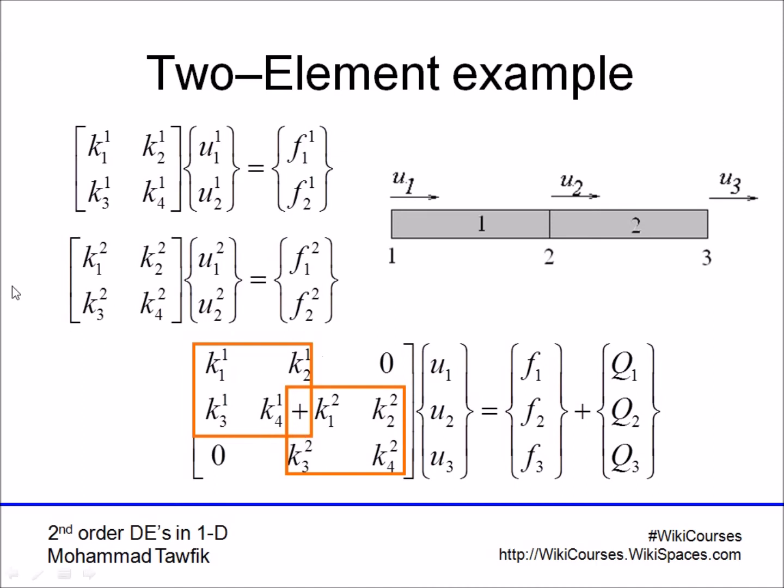The last equation is k₃ times u₁ of the second element, which is u₂, and k₄ multiplied by u₂ of the second element, which is u₃. In the middle, if you add both terms, you get k₄¹ plus k₁², k₂² multiplied by u₁ u₂ u₃ equals f₂ plus q₂.